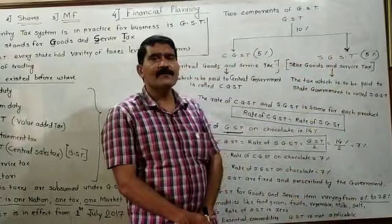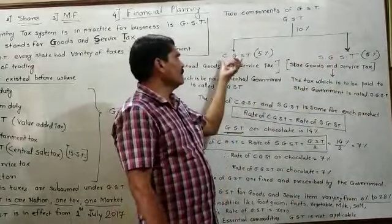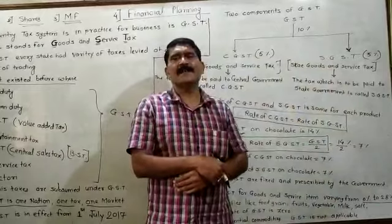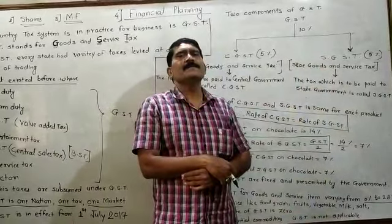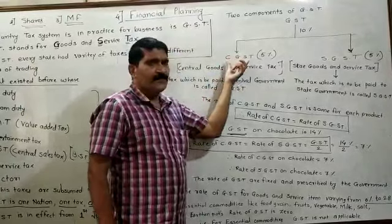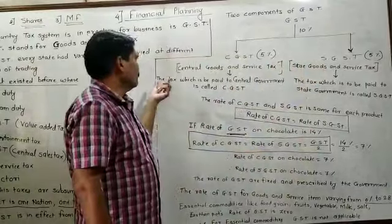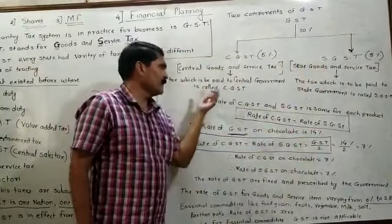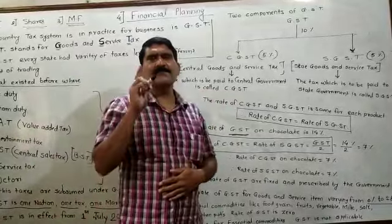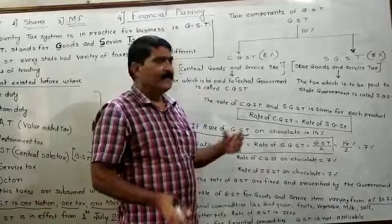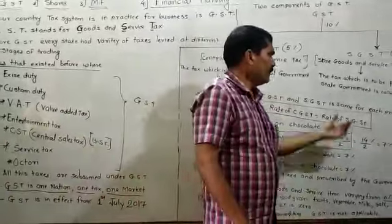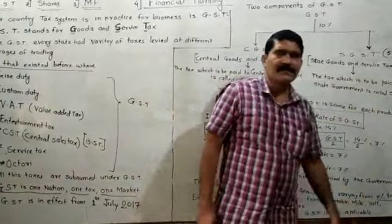The two components of GST are CGST and SGST. The tax which is paid to the central government — when the customer directly pays that tax — is called CGST. The tax which is paid to the state government is called SGST.